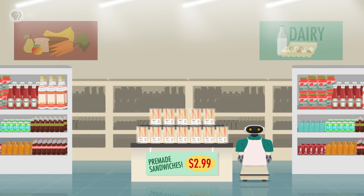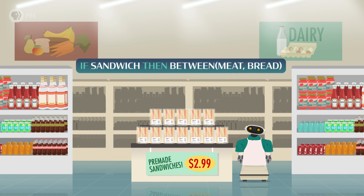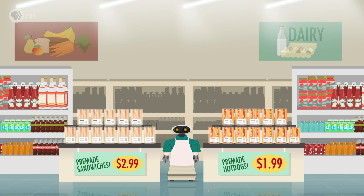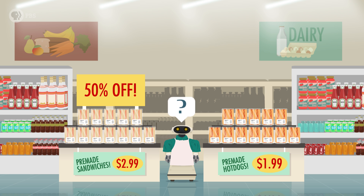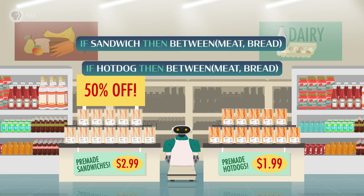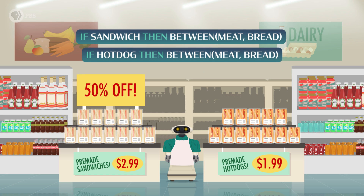This process of coming up with new propositions and checking whether they fit with the logic of a knowledge base is called inference. For example, the knowledge base of a grocery store might have a proposition that sandwich implies between(meat, bread) — or if sandwich, then between(meat, bread). Meat and bread are the symbols and between is the relation that defines them. So basically, this proposition is defining a sandwich as a symbol with meat between bread. There might be other rules in the grocery knowledge base, like a hot dog also implies between(meat, bread) — or if hot dog, then between(meat, bread). Now, if the grocery store is having a sale on sandwiches, should the hot dogs also be on sale? Well, with inference, the grocery store AI system can apply the following logic: because sandwiches and hot dogs are both symbols that imply meat between bread, then hot dogs are inferred to be sandwiches, and the discount applies.